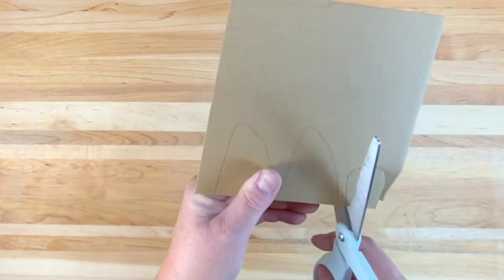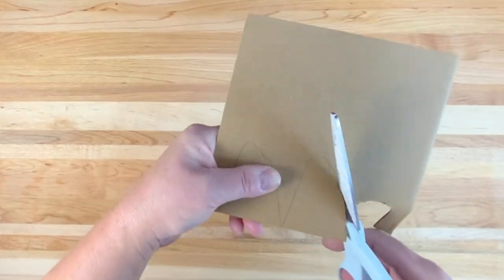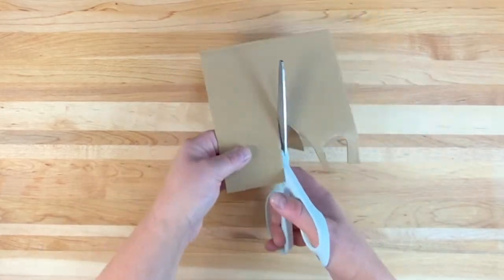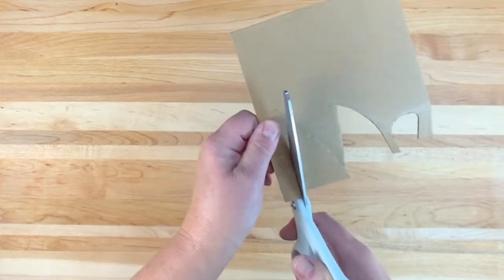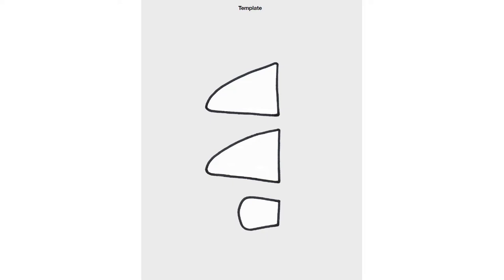Step one, the wings and tail feather. Draw and cut out two wings and one tail feather out of cardboard. Use the wing template included in these directions if needed.